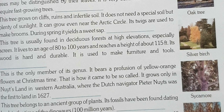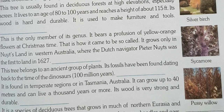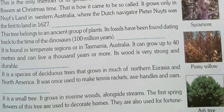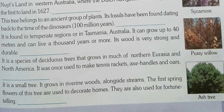Sycamore is used to make furniture and tools because it is hardwood. Hardwood is hard and durable, so it lasts a long time. Therefore furniture and tools are made from the sycamore tree. Then you have pussy willow — it is a small tree that grows in riverine woods alongside streams.